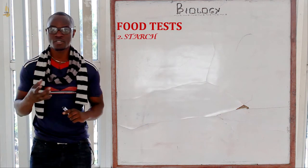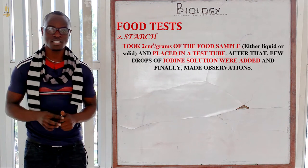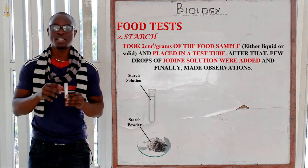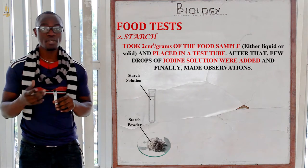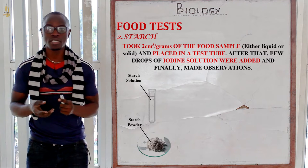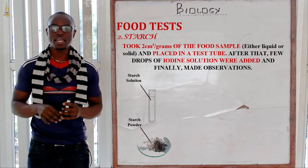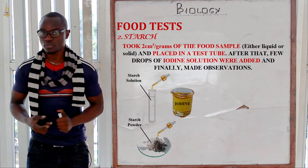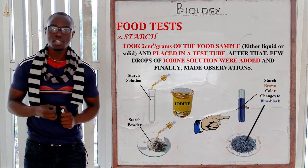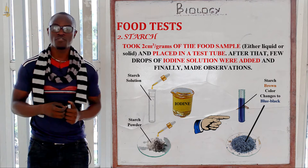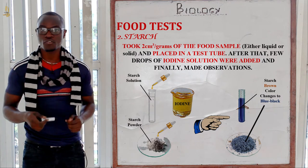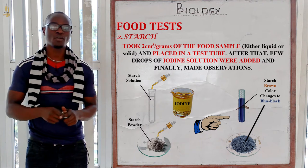Now let's look at the next one which is testing for starch. So how do you test for starch? You take the food sample and place it inside the test tube — about one centimetre cubed of the food sample, or if it's solid you place it there. Then after that you add a few drops of iodine solution, which will be brown in colour.